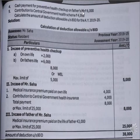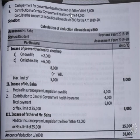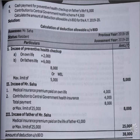In case of parents, if either of the parents is a senior citizen, the limit is 50,000; if non-senior citizen, then 25,000. On own life, eligible for deduction. Father's life is also eligible for deduction. Preventive health checkup on own life: 2,000 eligible. Cash payment for preventive health checkup — father's life 6,000, own life 2,000, total 8,000 spent on preventive health checkup. Contribution to central government health scheme 4,000 is also eligible. Calculate the deduction allowable under Section 80D for assessment year 2019-20.